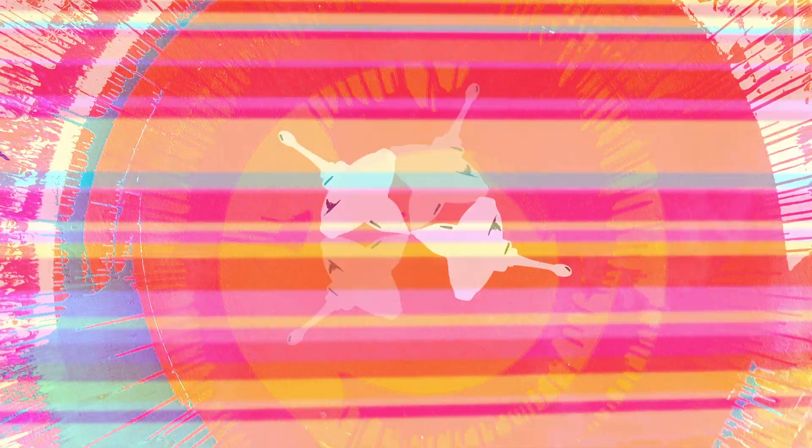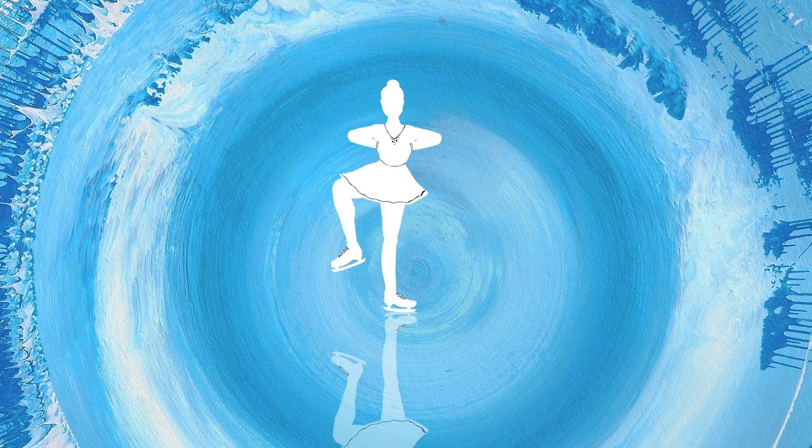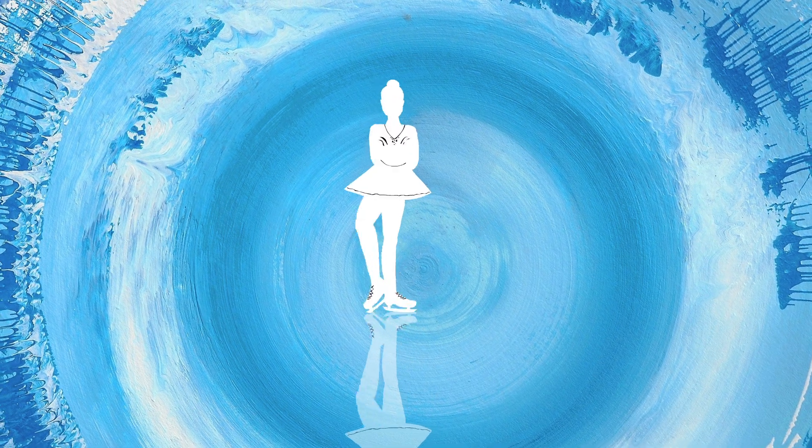But the spin can speed up. If an ice skater is gliding across the ice in straight line motion and she pulls her arms in, she keeps on gliding at the same speed. But if she is spinning on the ice and she pulls her arms in, you know what happens next. She spins faster.